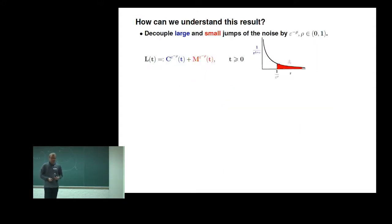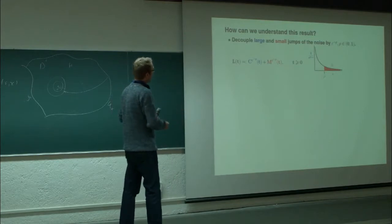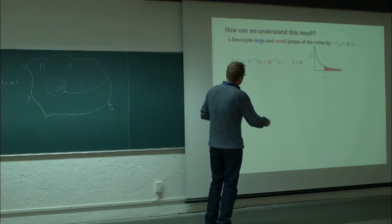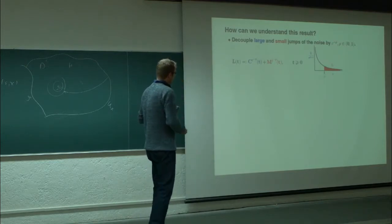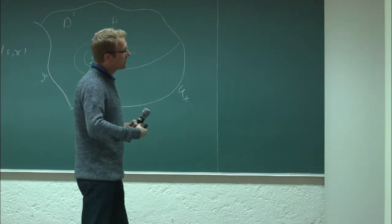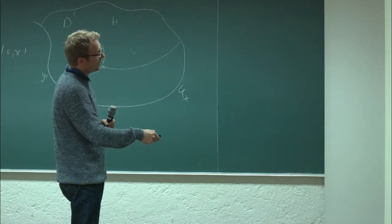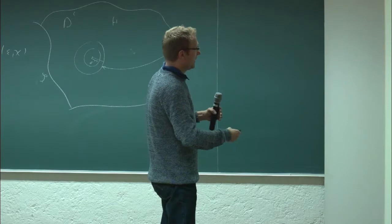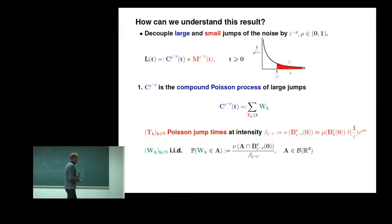This means lambda_epsilon times the exit time is essentially exponentially distributed, so tau is distributed like 1 over lambda_epsilon, giving polynomial growth — 1 over some monomial in epsilon depending on the alpha-stable noise or the tail of the regularly varying measure. Now, how can we understand this result? The main idea is to decompose the driving noise radially and divide the radial part into large jumps (larger than epsilon to the minus rho, where rho is between 0 and 1) and small jumps.